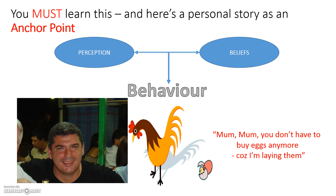The third day she comes in with another two eggs. Now I'm thinking to myself: my belief is that I'm not a chicken and chickens lay eggs — but my experience, my perception of what I'm seeing, is that I may well be laying eggs. I kind of thought, well, maybe I'm not a chicken, but maybe I've got certain chicken-like tendencies. I remember going home and running off the train saying to my mum, 'You don't have to buy eggs anymore because I'm laying them.'